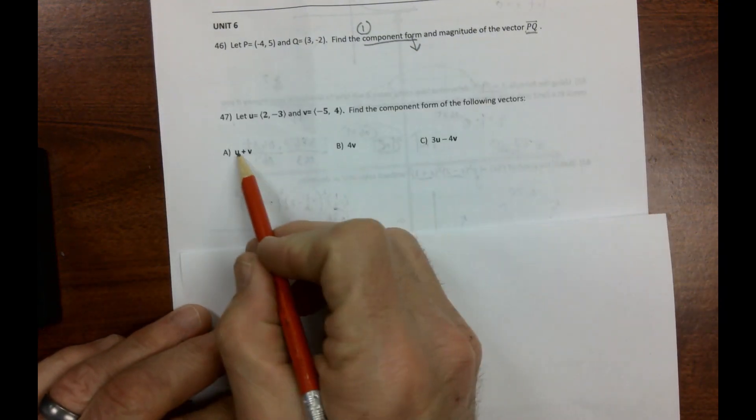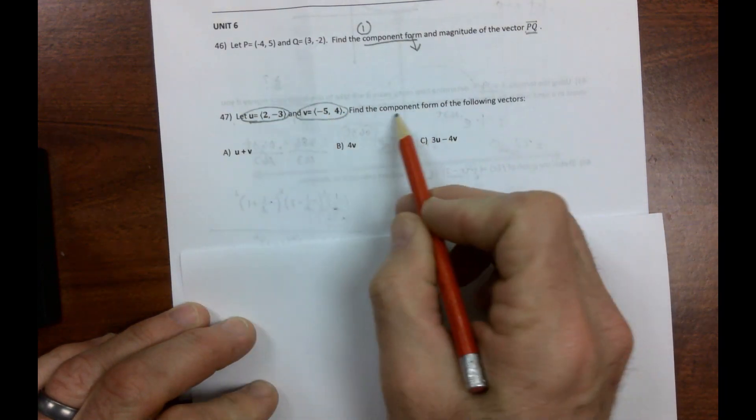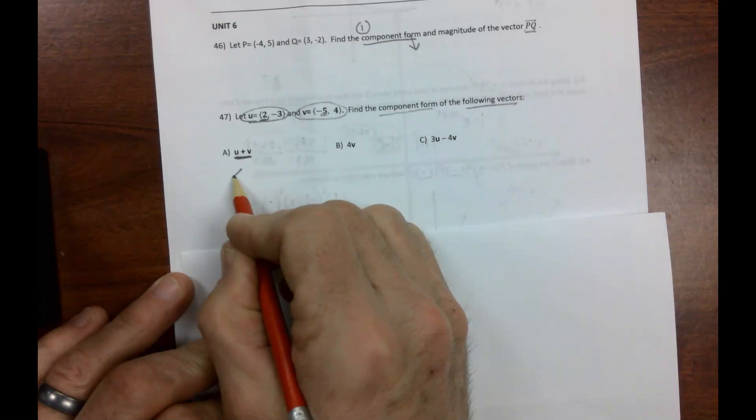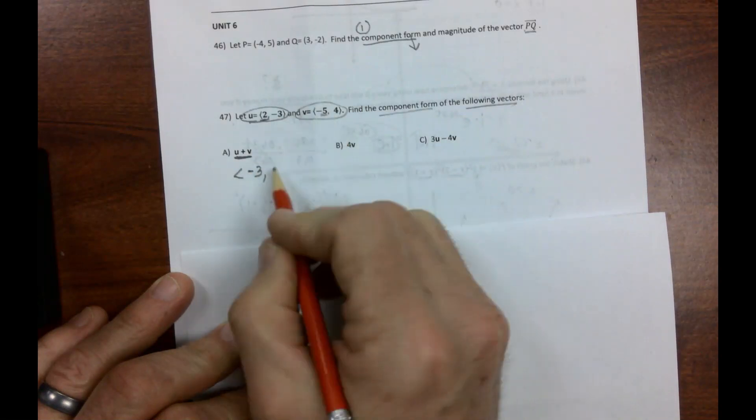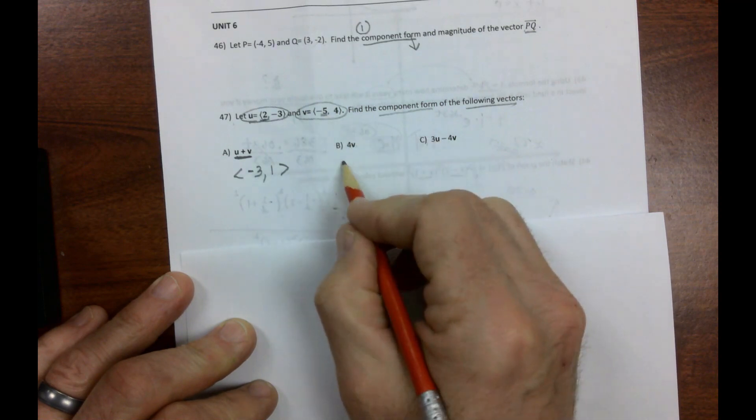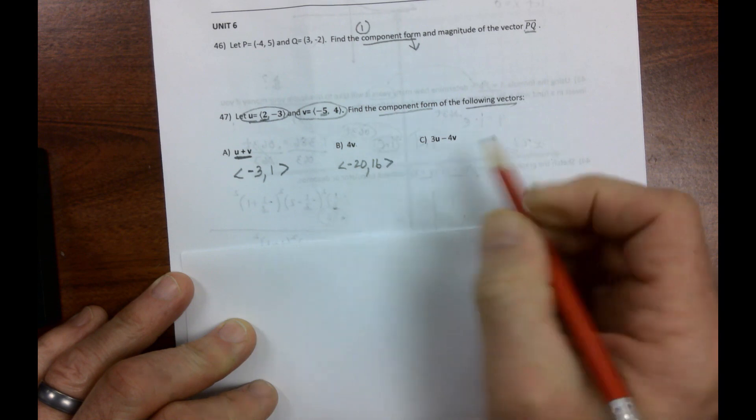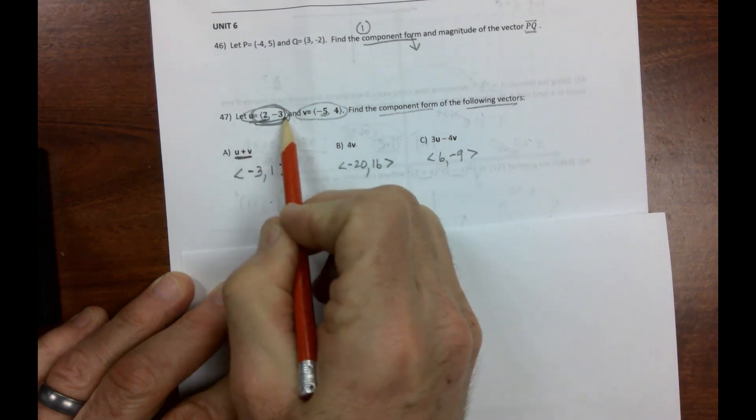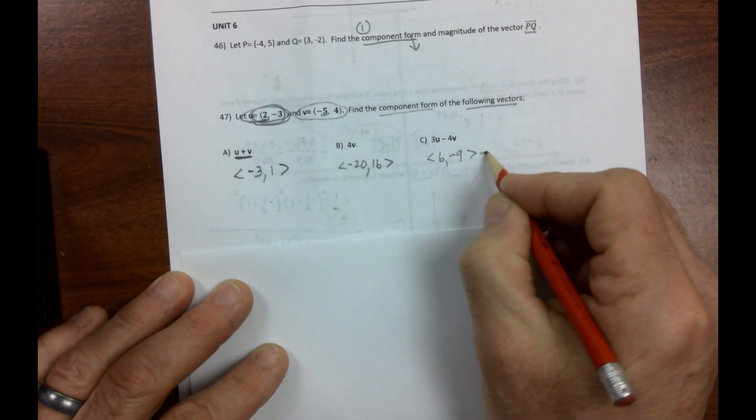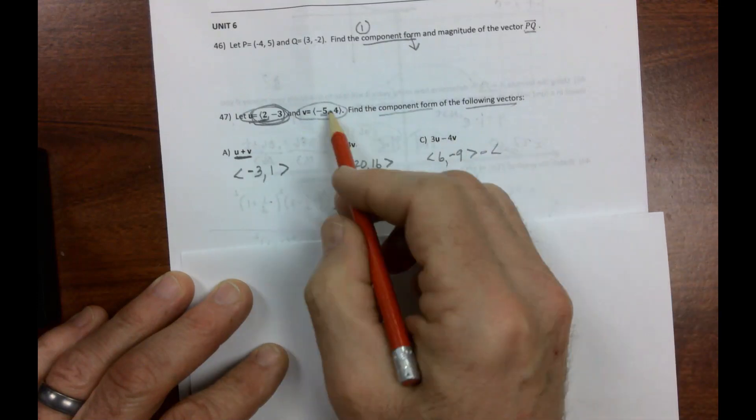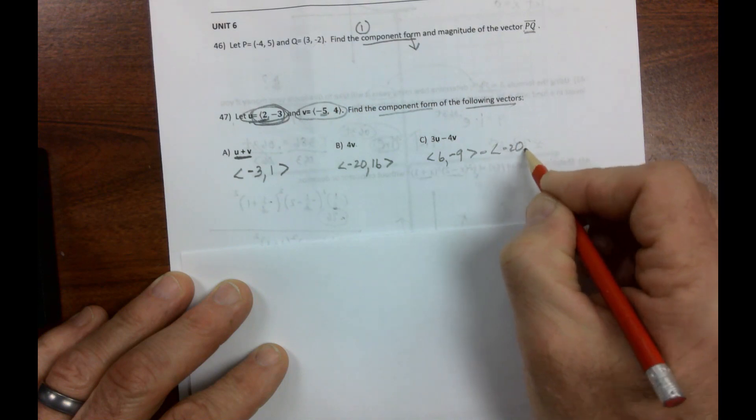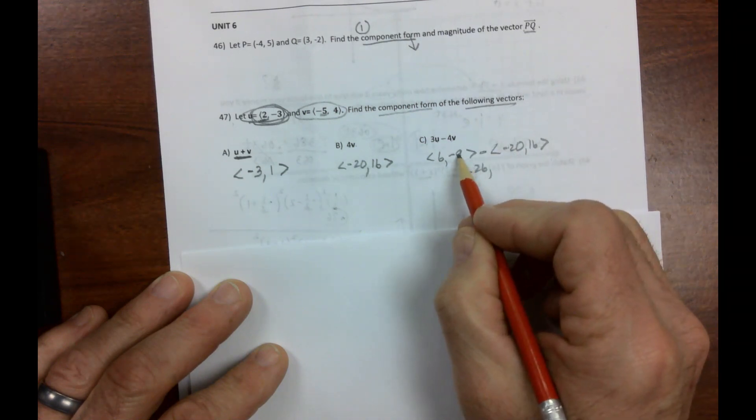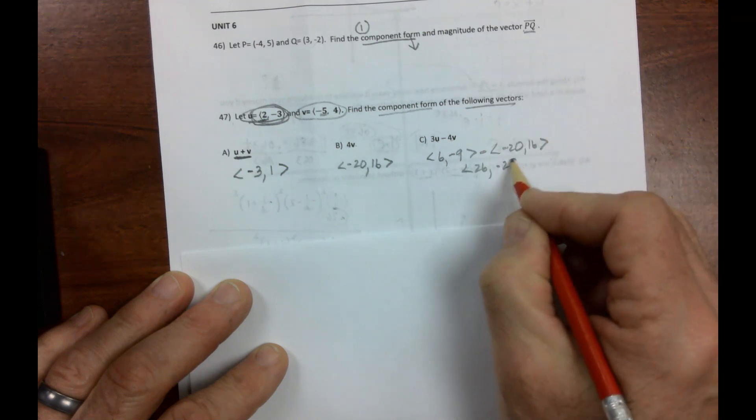Number 47. Vector u is this, vector v is this. Find the component form of the following vectors. Apply u plus v. Well, just add these similar parts together. Done. 4 times v, you just multiply each part by 4. Done. 3u, which would be 6, negative 9, if I multiply both these pieces by 3, minus 4 times v, which is negative 20, 16. So 6 minus negative 20 is 26, because that would be a plus. Negative 9 minus 16 would be negative 25. And there you go.